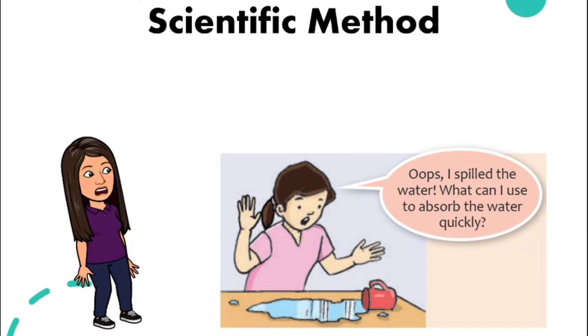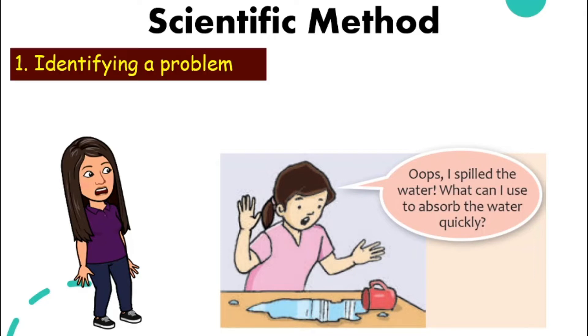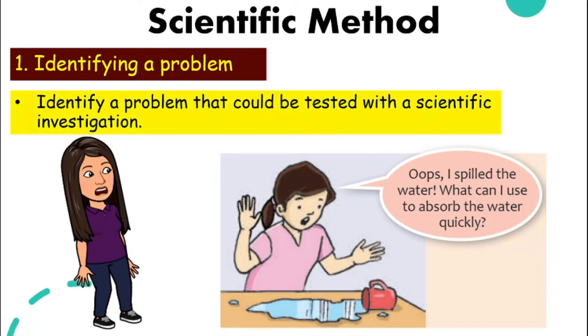First, look at this picture. This girl spilled some water and she is wondering what she can use to absorb the water quickly. The first step in scientific method is identifying the problem. We need to identify a problem that we can test with a scientific investigation. So in this case, her problem is she is wondering what she can use to absorb the water quickly.